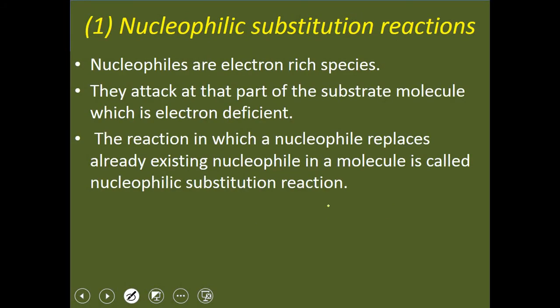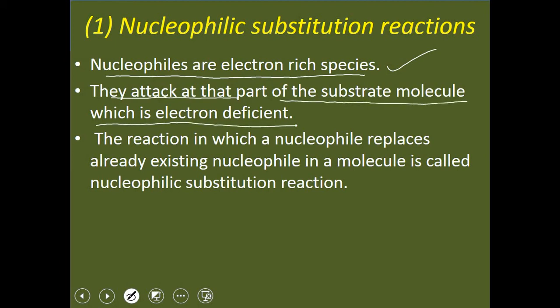Now we will see nucleophilic substitution reactions. There are two types. First, what is a nucleophile? Nucleophiles are electron-rich species — those species which have extra electrons are called nucleophiles. They attack the part of the substrate molecule which is electron-deficient, i.e., which possesses the positive charge. Nucleophilic reactions are those reactions in which a nucleophile replaces an already existing nucleophile in a molecule; these are called nucleophilic substitution reactions.